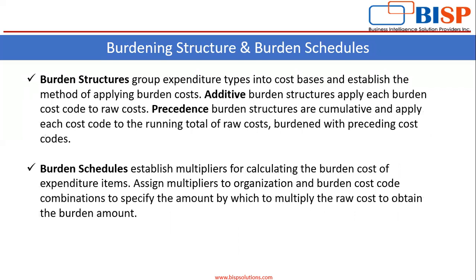Burden structure groups expenditure types into cost base and establishes the method of applying burden cost. Additive burden structure applies each burden cost to raw cost, and precedence burden structure is cumulative and applies each cost code to the running total of raw cost burdened with precedence cost codes. You then assign the burden structure into burden schedules. Burden schedules establish multipliers for calculating the burden cost of expenditure items, assigning multipliers to organization and burden cost code combinations to specify the amount by which to multiply the raw cost to obtain the burden amount.